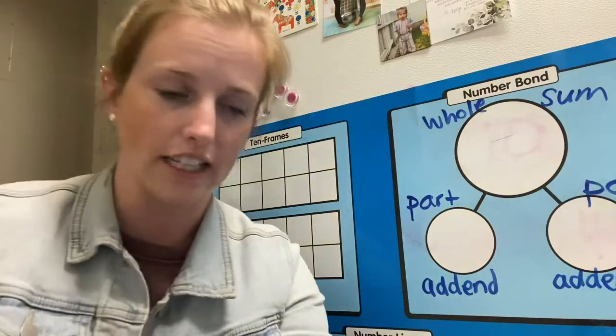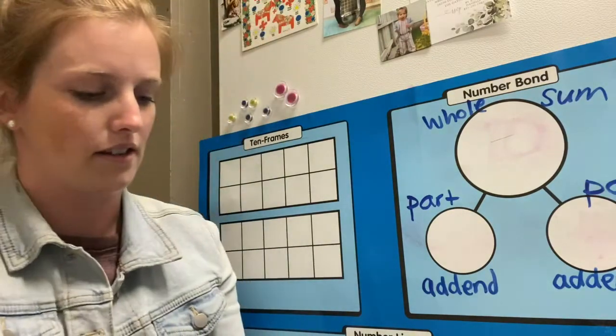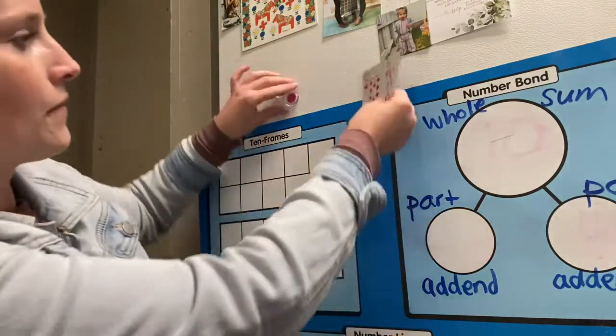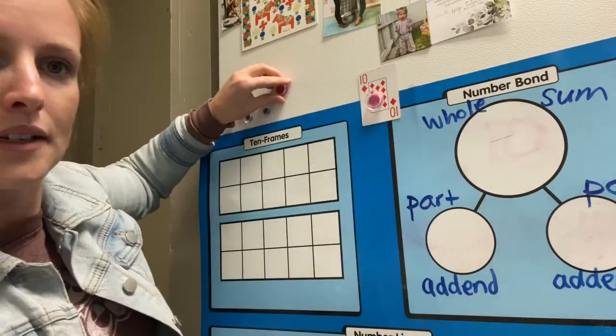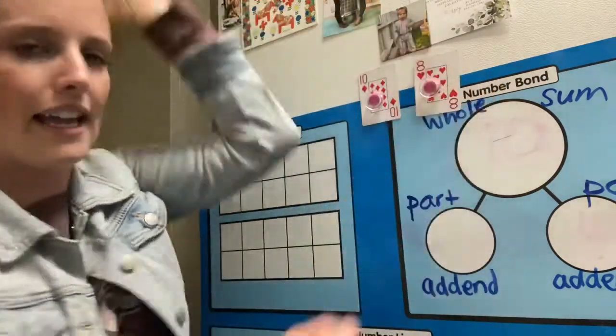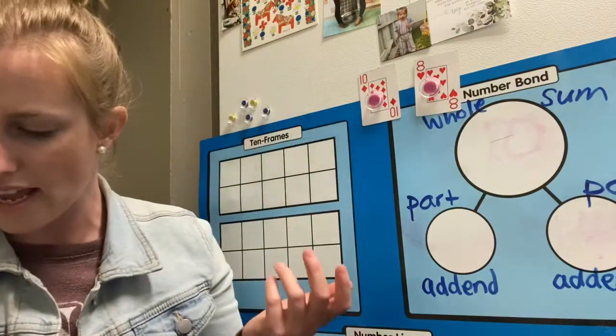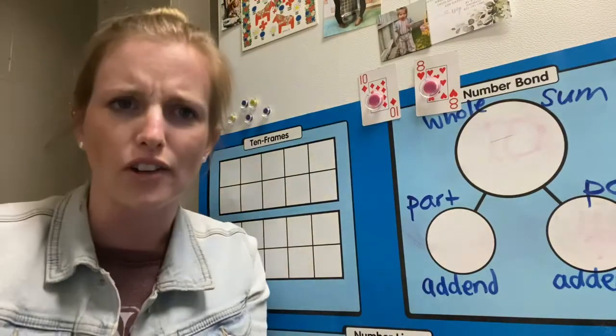All right. My next two challenges are going to be... Oh, this is a nice one. 10 plus 8. All right. So, I have to think in my head. I'm going to use my strategy to count on.